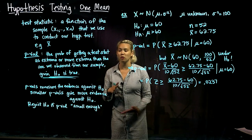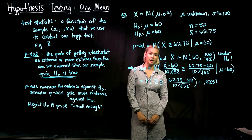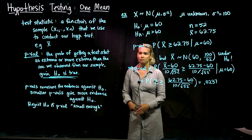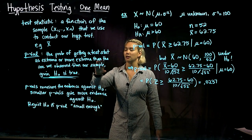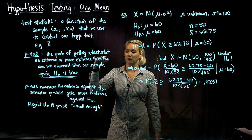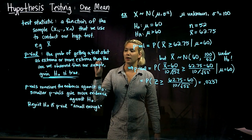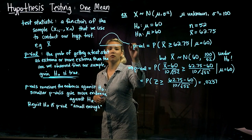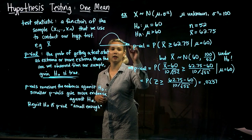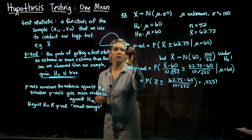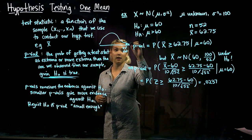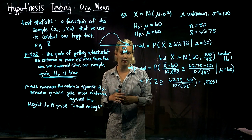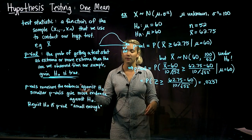P-values measure the evidence against the null hypothesis. If we have a lot of evidence against the null hypothesis, we're going to have a smaller p-value. Our test statistic is going to be very extreme in that case. If we look at the sampling distribution for the test statistic, as we go further and further into the tail to calculate our p-value, the shaded area gets smaller and smaller, so our p-value gets smaller as we get more evidence against the null.